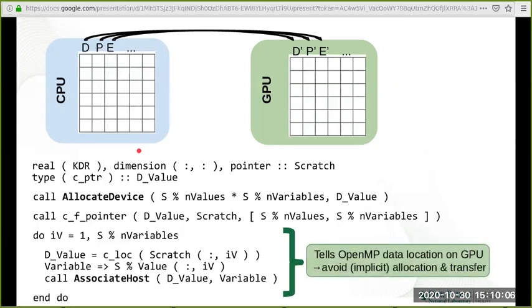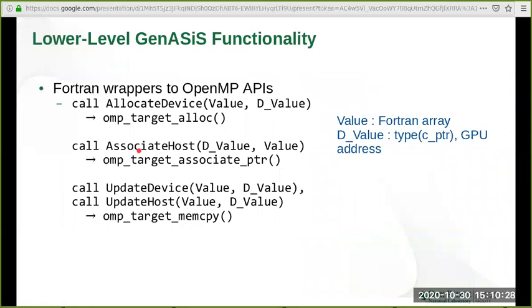The association is done this way so that our solver can address its variables independently. By establishing these associations, we tell the OpenMP runtime the data location on GPU for each of the variables on the host. This avoids implicit allocation and data movement in the kernel offload region of our code.